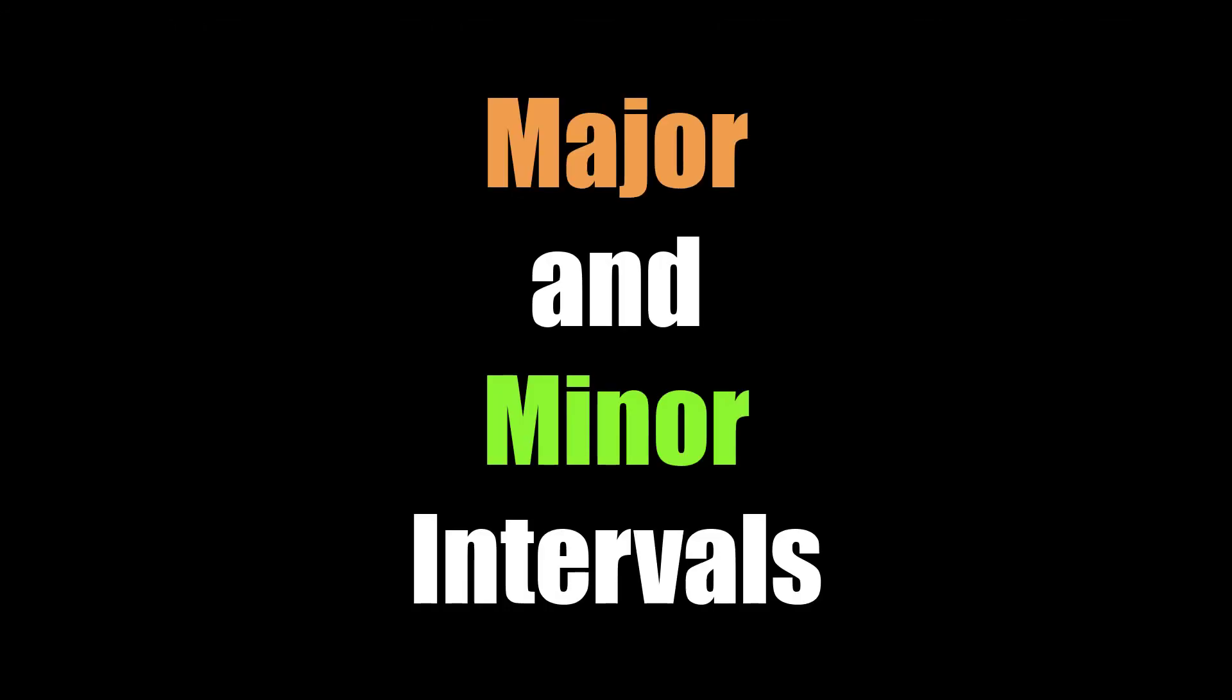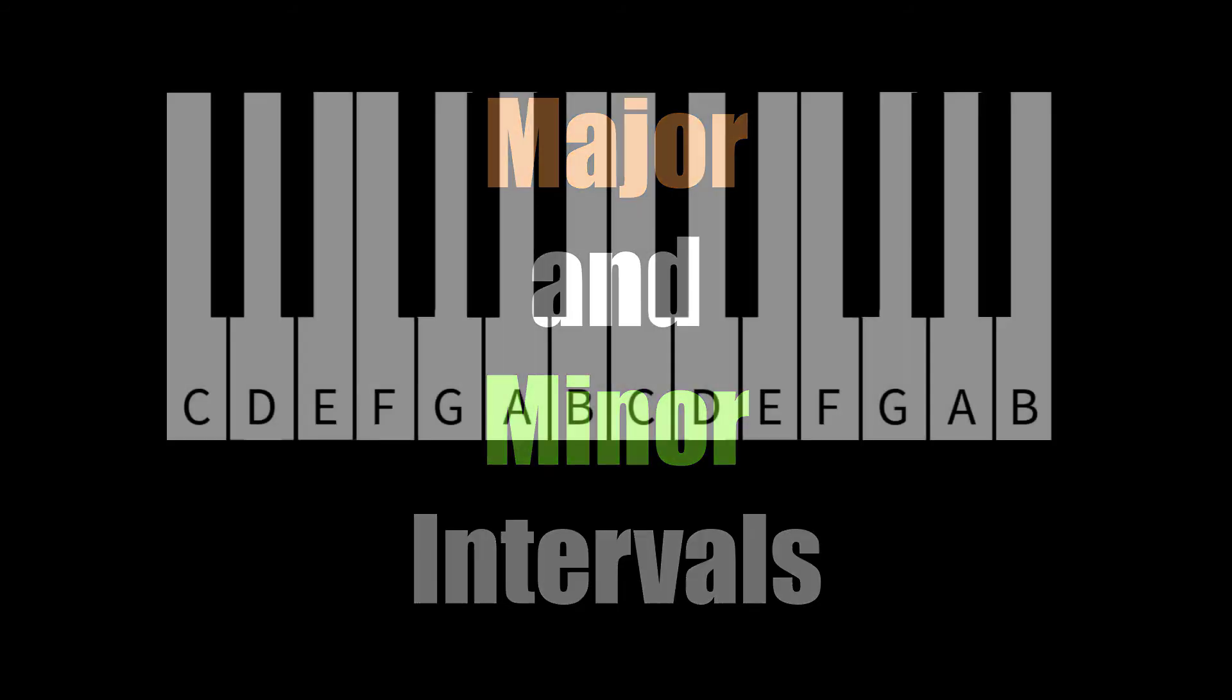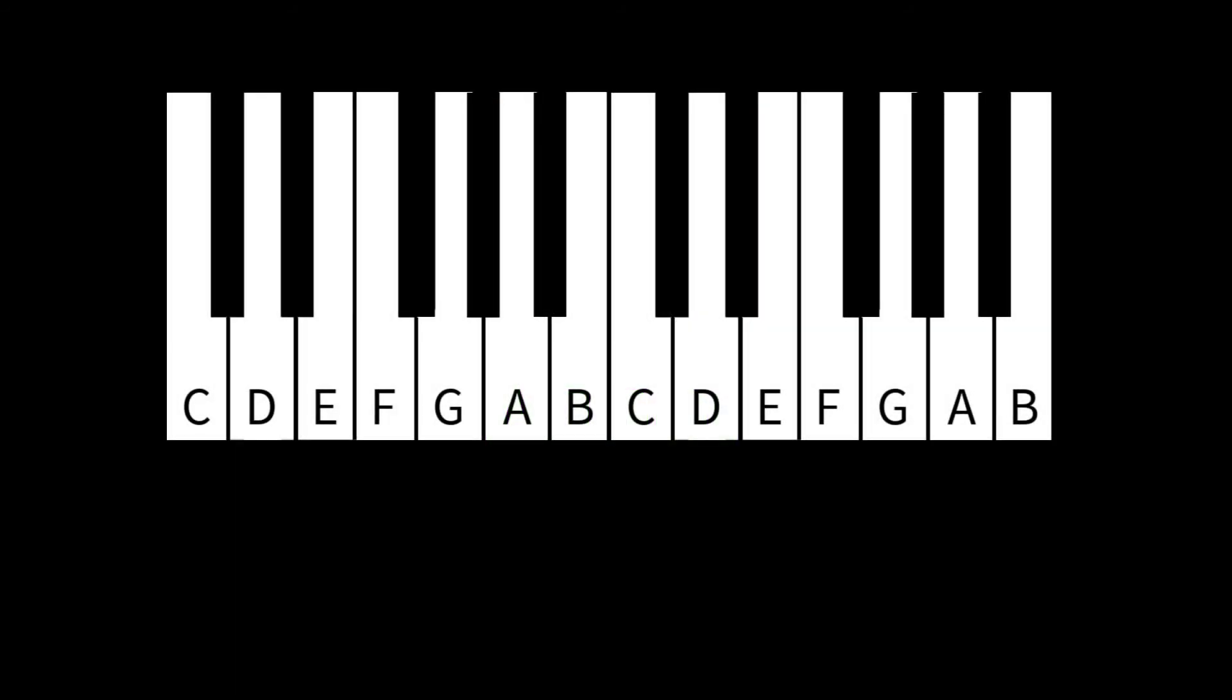So now let's delve in a little bit to these terms, major and minor. To do that, we're going to talk some more about intervals. If we're looking at a keyboard, the distance between the first note and the second note is called a second. The distance between the first note and the third note is called a third. This continues all the way up to the seventh, and then the eighth note, which has the same name as the first, is called an octave.